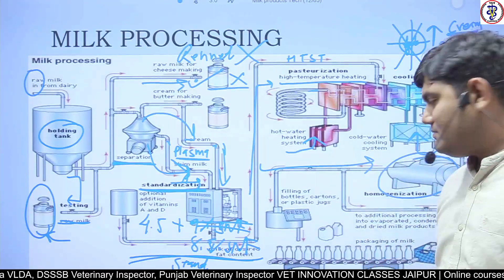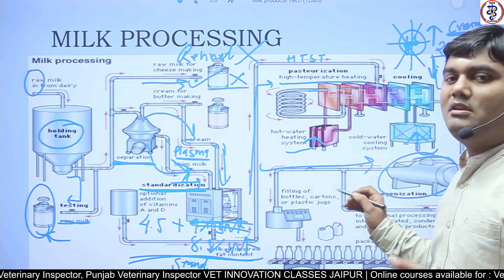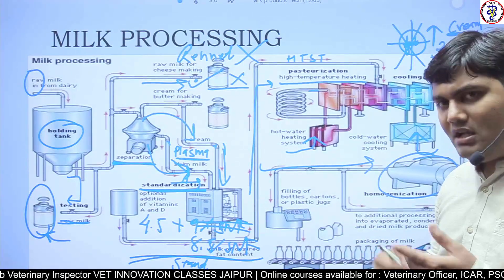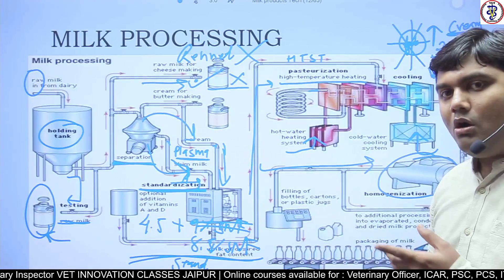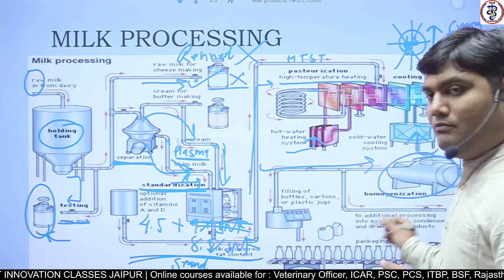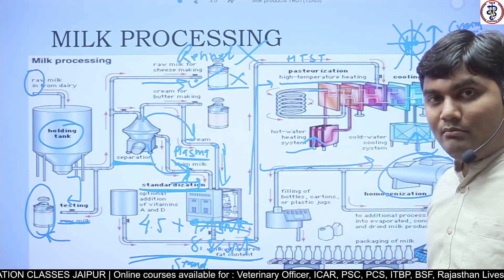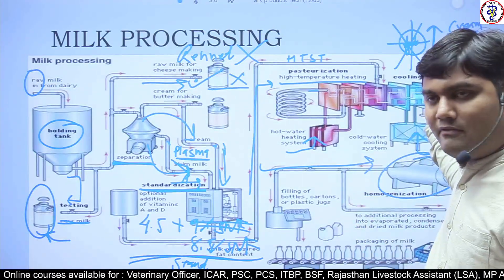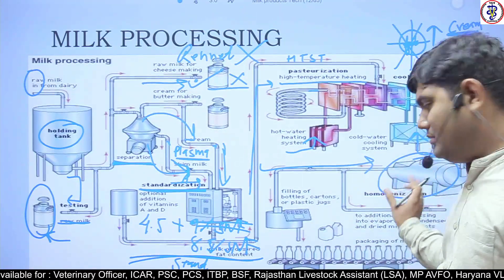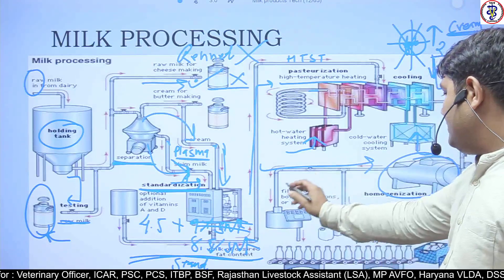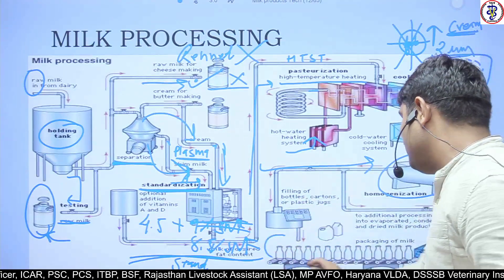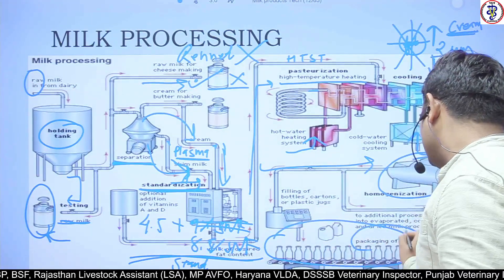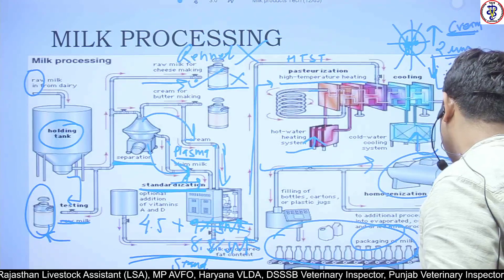Homogenization is an optional process. If you intend to make butter or ghee, you need cream, so you should not break the fat globules into smaller fragments — skip this step. After processing, the milk goes for filling and bottling, and after packaging it is sent outward.